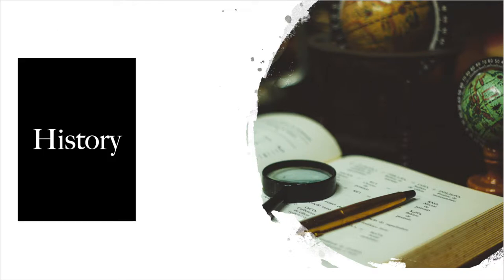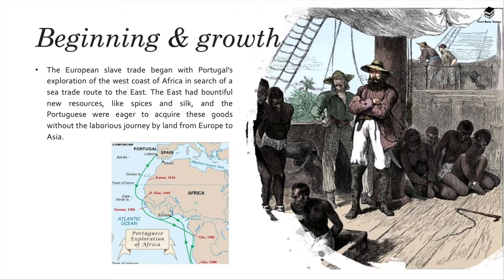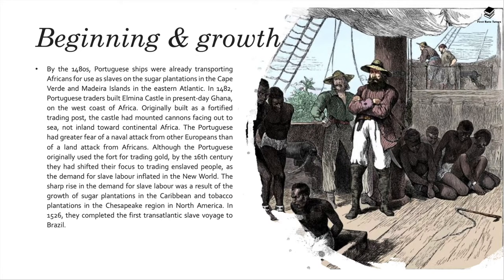The European slave trade began with Portugal's exploration of the west coast of Africa in search of a sea route to trade to the east. The east had bountiful resources like spices and silk, and the Portuguese were eager to acquire these goods without the laborious journey by land. By the 1480s Portuguese ships were already transporting Africans for use as slaves on the sugar plantations in Cape Verde and the Madeira Islands. In 1482 Portuguese traders built Elmina Castle in present-day Ghana. Originally built as a fortified trading post, the castle had mounted cannons facing out to sea, not inland.